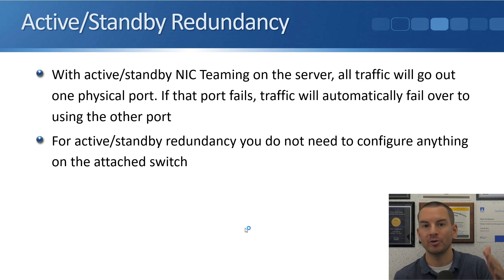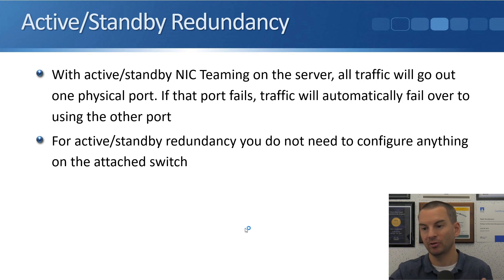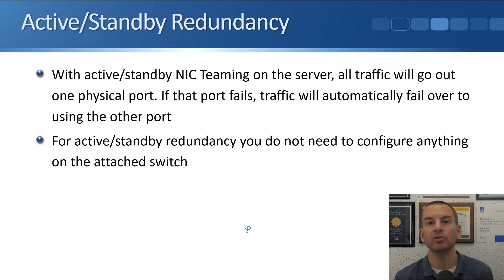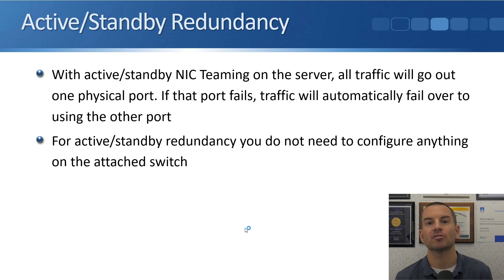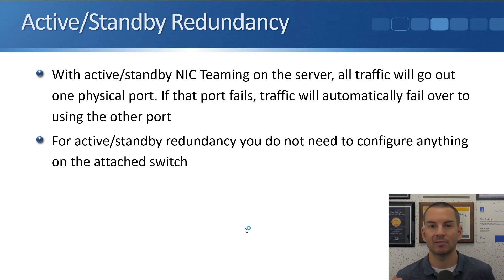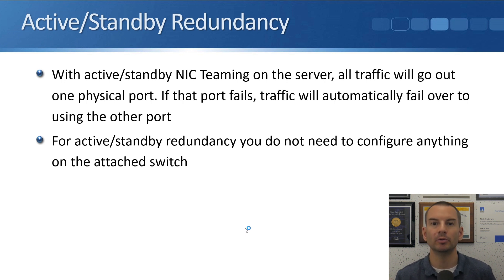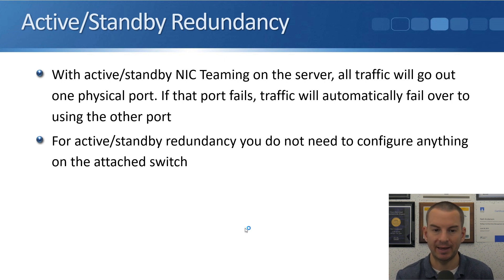Active standby gives us redundancy — one of the ports is always active. If it fails, or if the cable it's connected with fails, or if the switch port on the other side fails, then we'll automatically fail over to the other physical port, still using the same IP address. Any client connecting into that host doesn't need to change anything. The disadvantage of active standby is that you don't get any load balancing — traffic is always going out only one interface at a time.